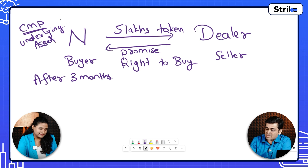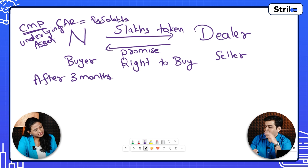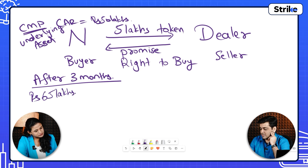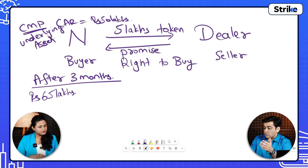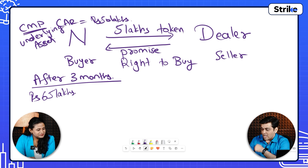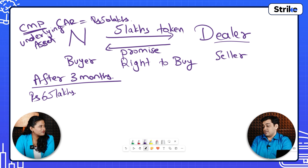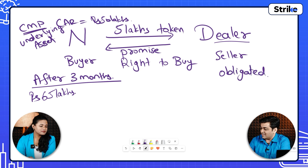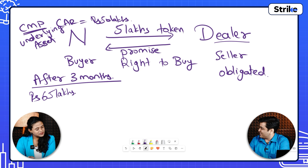The underlying asset is the car, priced at 50 lakh rupees, for which you gave a 5 lakh rupees token to get the right to buy it at 50 lakh rupees. Now after three months, let's say the car price increased to 65 lakh rupees. You will run to the dealer and say 'you promised to give me this car — come on, give it to me now.' The dealer cannot say no because he has accepted the 5 lakh rupees token, meaning he is now obligated to sell you the car at 50 lakh rupees.